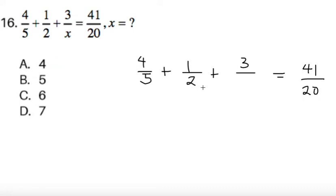Let's try to see if x equals 5. If it's choice B where x equals 5, the LCD of 5, 2, and 5 is only 10. Since this equals 41 over 20, which has a denominator of 20, we can conclude the answer is not 5.